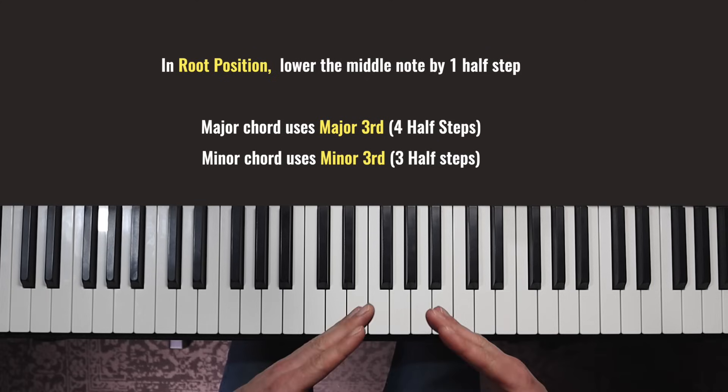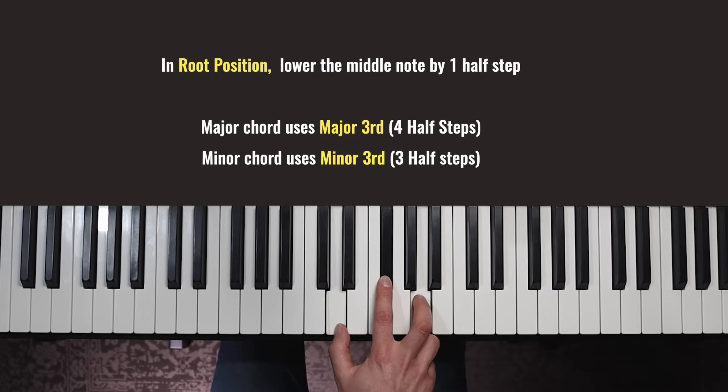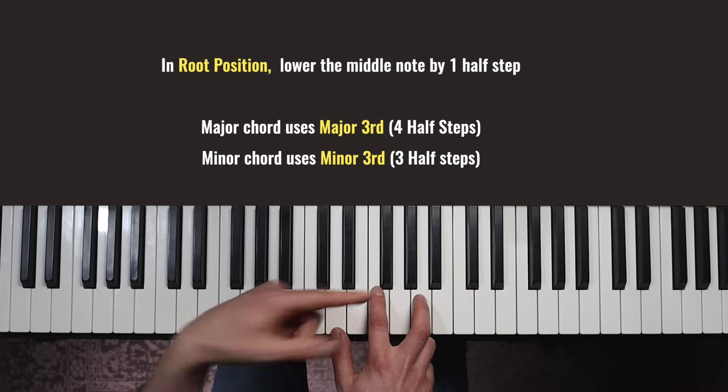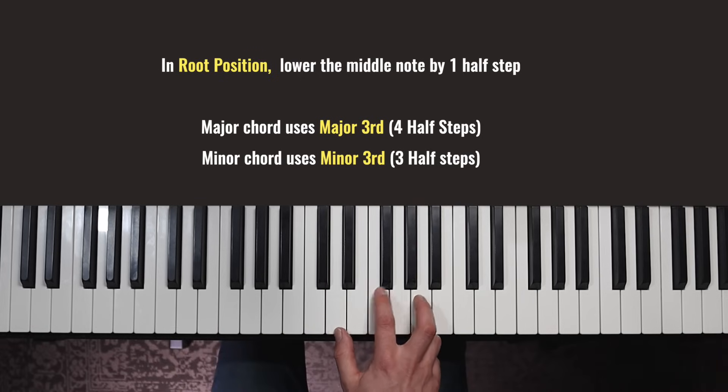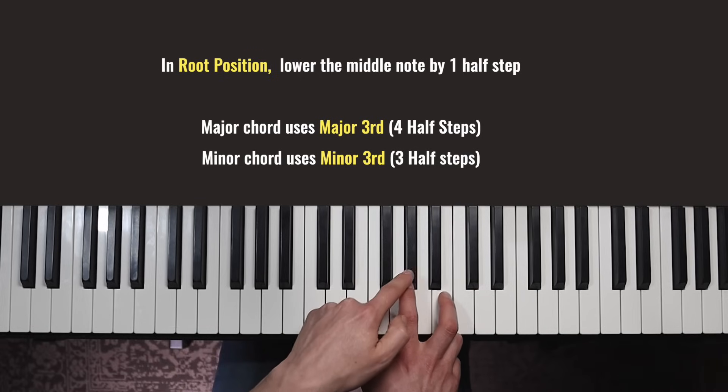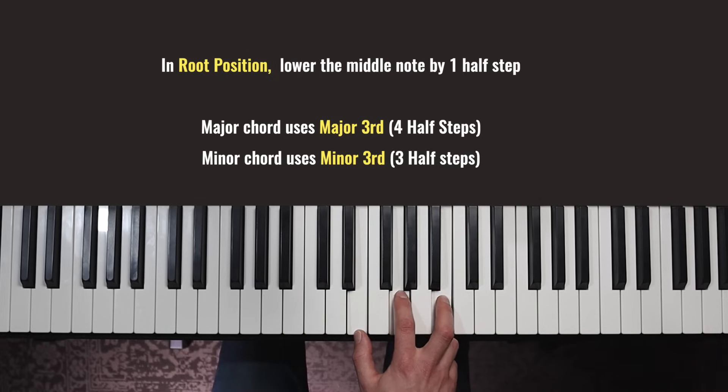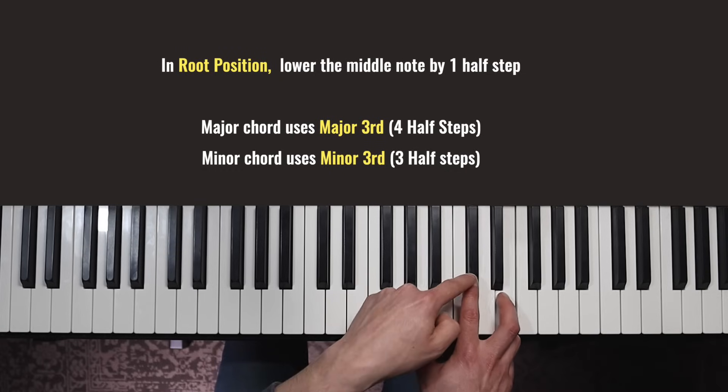The three major chords that had a black key in the middle, when you turn them into minor chords, they all become white notes. So D major, move that a half step down, moves to a white note. D minor. E major becomes E minor, move that down a half step, and A major becomes A minor.